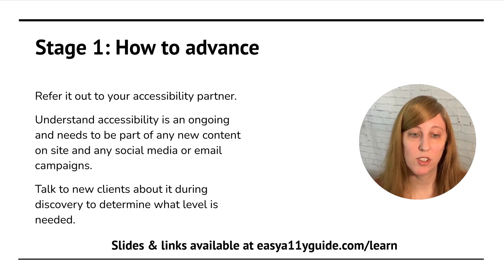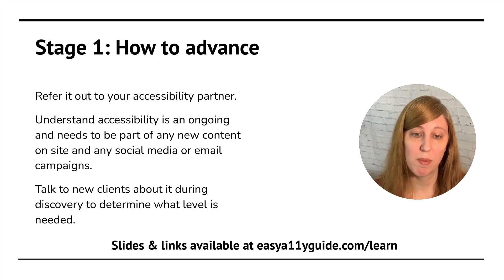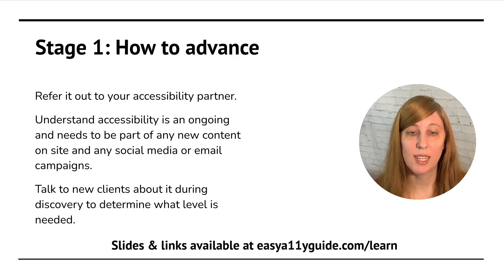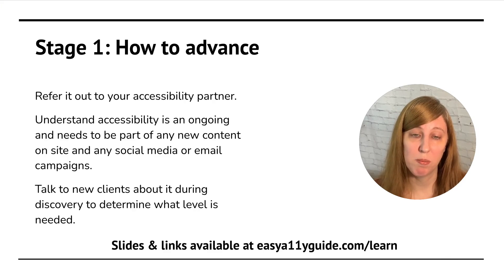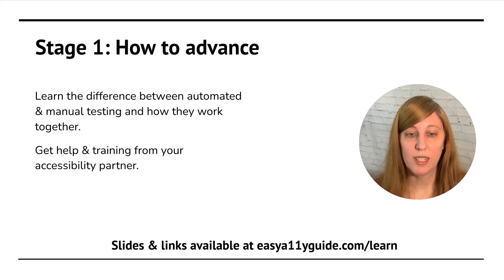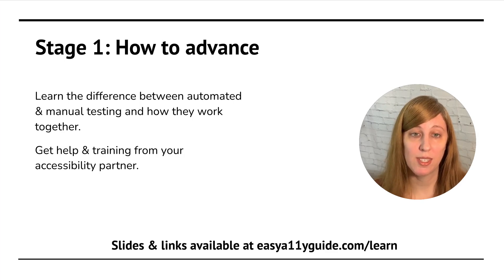To advance to the next stage, you'll start by referring accessibility work out and training your staff about what accessibility is — that it is an ongoing process, and that it needs to be part of not just your web interactions, but also social media and email marketing campaigns. You'll be talking to new clients about accessibility and finding out if it's a need or requirement, such as those who fall under the Americans with Disabilities Act Title II. You'll also be learning the differences between what automation can do for you and what parts manual testing are essential for.